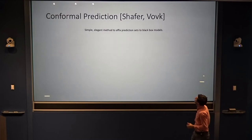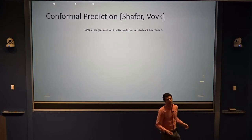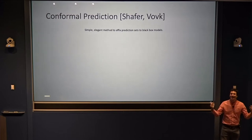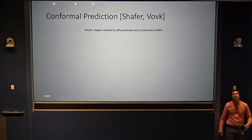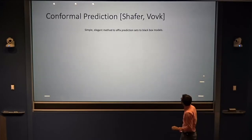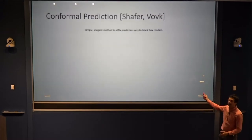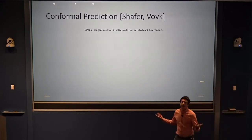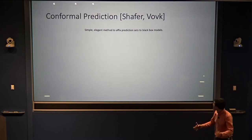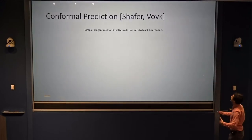Let me tell you about a simple technique called Conformal Prediction that I'm going to spend much of the talk critiquing — but actually it's pretty cool. It's a very simple, practical, useful thing. It's a method that can take an arbitrary black box that makes predictions and, without knowing anything about it, can affix those predictions with prediction intervals that are guaranteed to cover the labels with whatever the desired probability is.